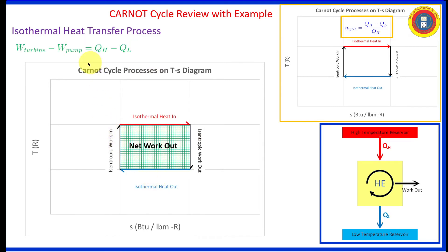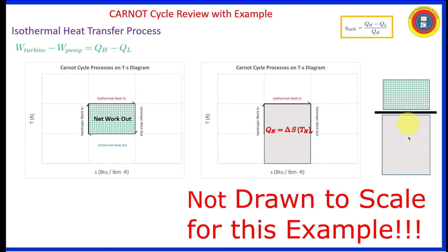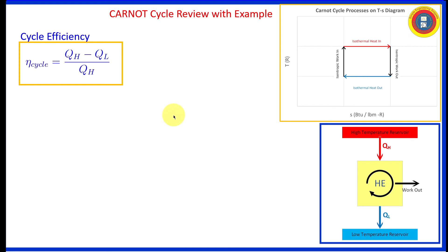We stated previously that the net work out is the difference in those heat transfers. So visually it is the area enclosed by this Carnot cycle as the green area is shown for this rectangle. A little bit of a sidebar is that based upon our cycle efficiency, the actual visual indication of the cycle efficiency is going to be the area of the network out divided by the area of the heat in.